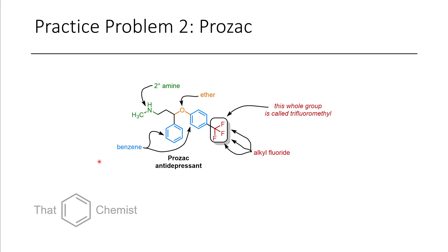In the second practice problem we see another secondary amine. In Prozac we also have two benzene rings, as well as an ether group and alkyl fluorides. These are technically primary alkyl fluorides. Usually when we have multiple fluorines connected to the same carbon, we would refer to them as a trifluoromethyl group, because this whole motif may have some unique characteristics, but it wouldn't be wrong to call them alkyl fluorides because they are.